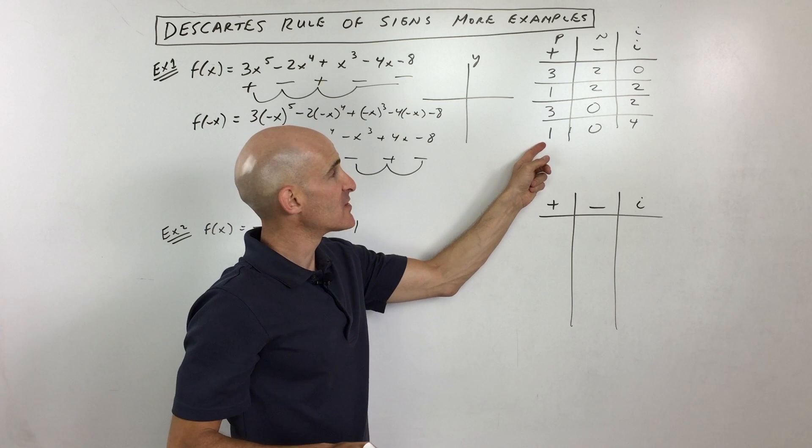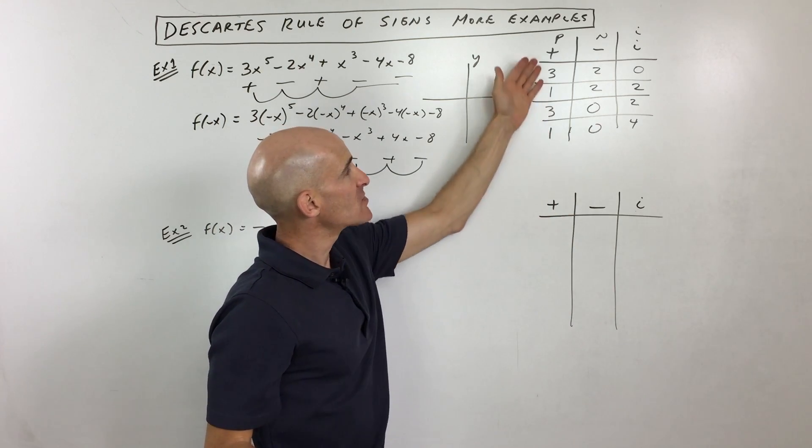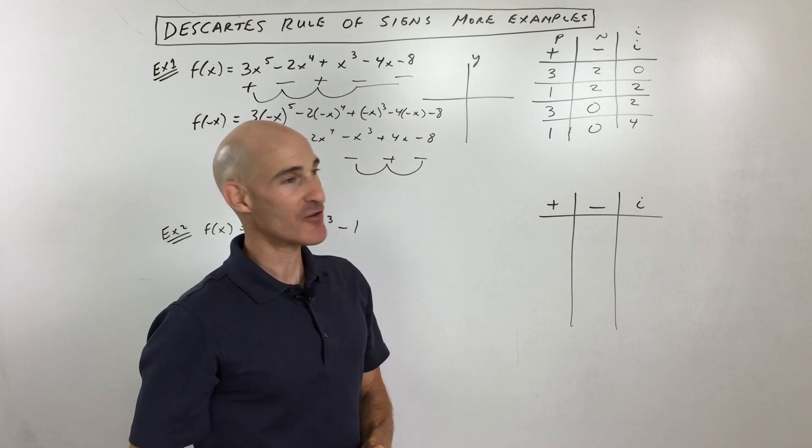Now I can't take another 2 away from this 1 and make this a negative one. You can't have a negative number of zeros. So these are our only combinations here. Now you're probably asking yourself, well, Mario, why does this even matter, right?